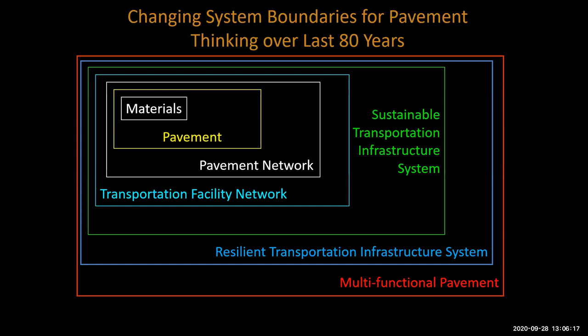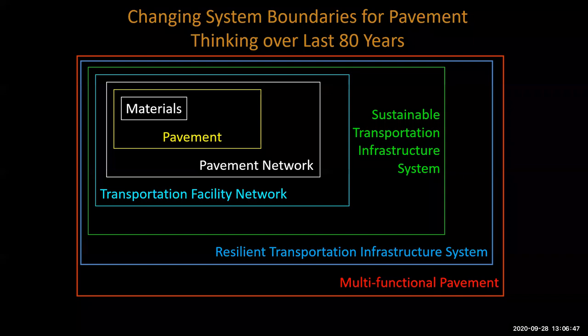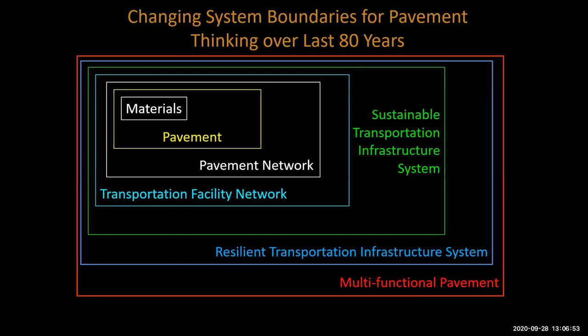Some changing system boundaries going back 80 years. In the 1940s, the main focus was on pavement materials. Then people began looking at pavement structures — some of that came out of California, the California Bearing Ratio, which we haven't used since 1942 for state highways but still has the name California on it. Then it was expanded to pavement structures. Once the network had been built out, pavements started needing maintenance and rehabilitation, and we had limited resources and had to prioritize those. We began thinking about sustaining a pavement network.